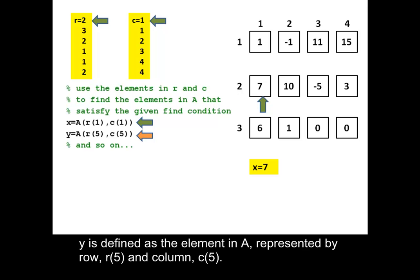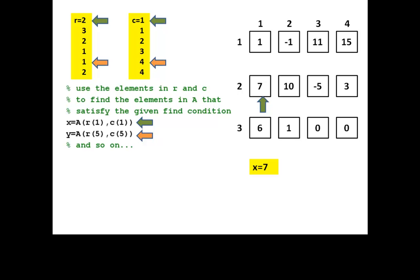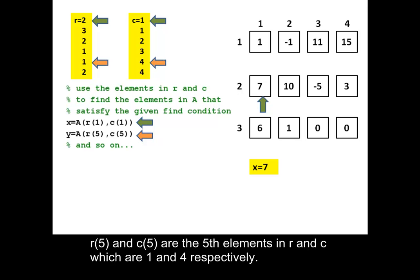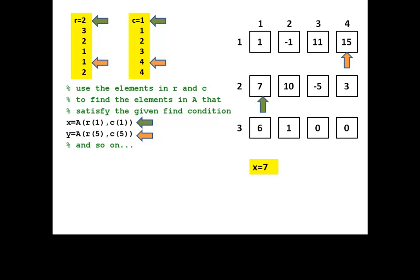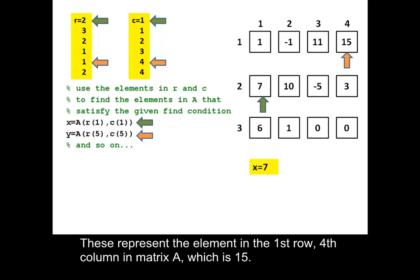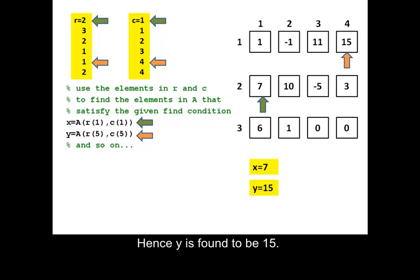Y is defined as the element in A, represented by row R(5) and column C(5). R(5) and C(5) are the fifth elements in R and C which are 1 and 4 respectively. These represent the element in the first row, fourth column in matrix A, which is 15. Hence Y is found to be 15.